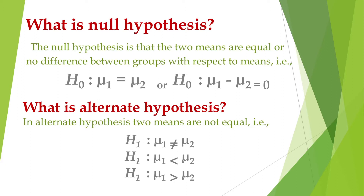What is the alternate hypothesis? In the alternate hypothesis, the two means are not equal. mu1 is not equal to mu2, or mu1 is less than mu2, or mu1 is more than mu2.